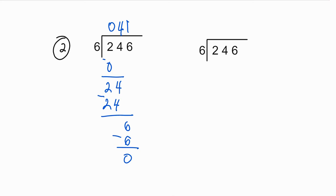With short division, you do the mental calculation again like we did in the first example. 6 doesn't go into 2, so that's zero. 0 times 6 is 0, so carry the 2. 6 goes into 24 four times. 4 times 6 is 24, giving you zero remainder. 6 goes into 6 one time, so your answer is 41.